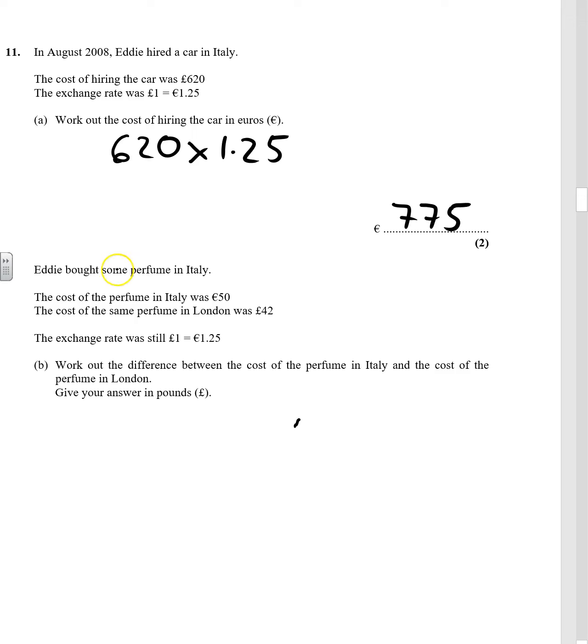Part B. Eddie bought some perfume in Italy. The cost of the perfume was €50. The cost of the same perfume in London was £42, with the same exchange rate. Work out the difference between the cost of the perfume in Italy and the cost in London. We want the answer in pounds.